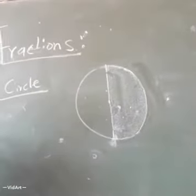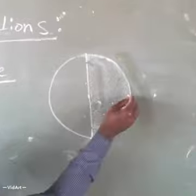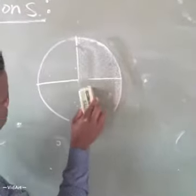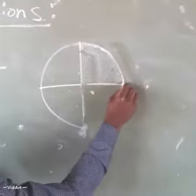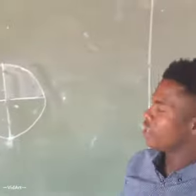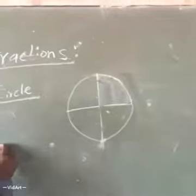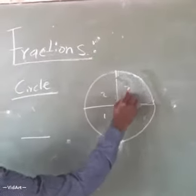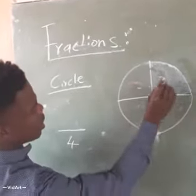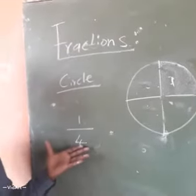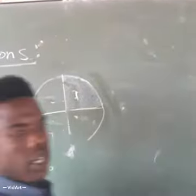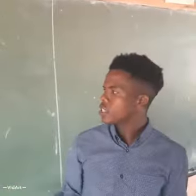Another example: you can divide this circle into four equal parts — a quarter. Then shade only one part. They say give us the fraction of the shaded part. How many parts do we have? One, two, three, four — so the denominator is four. How many parts are shaded? Only one. So we're going to have one over four as the fraction.